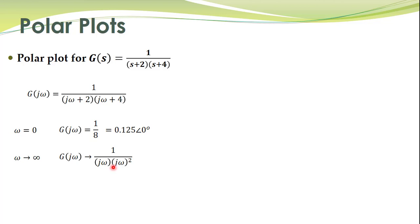For omega equal to infinity, the magnitude is 0. Note: there is a correction here — the transfer function has j omega plus 4 without a square, so that squared term was written by mistake. After correcting this, the angle at omega equal to infinity is minus 180 degrees: minus 90 from the first j omega factor and minus 90 from the second.